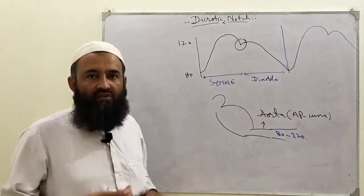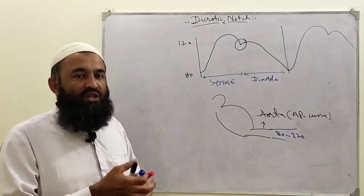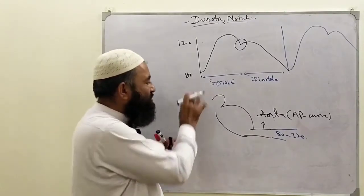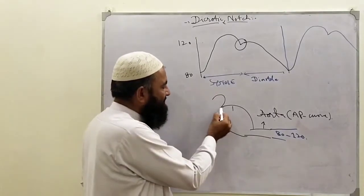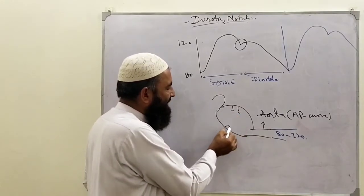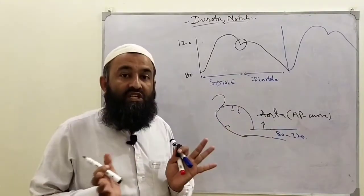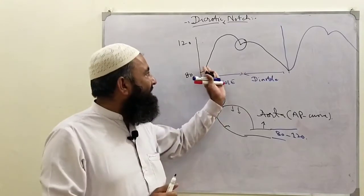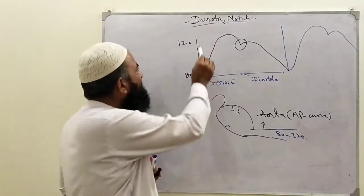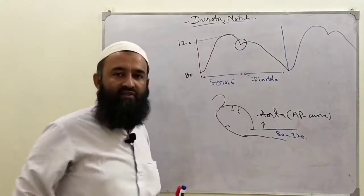Now in this curve, if we represent this, what will happen when systole starts? This means the ventricle is pumping its blood in forward direction into the aorta. The pressure in the aorta increases and reaches the peak level of 120.